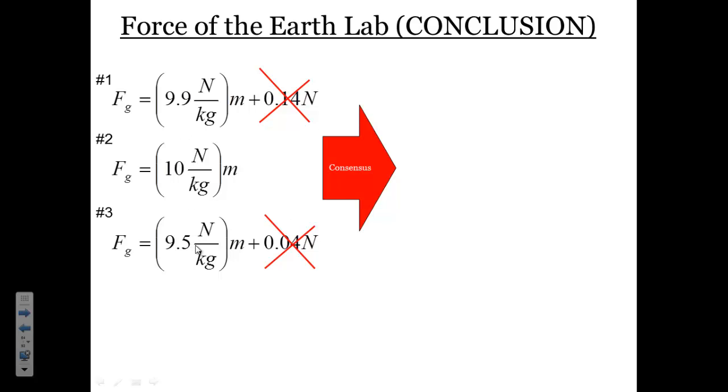When we look at the equations, we see that the slopes are all around in the higher 9s or 10. We decided that the slopes are all about 10 newtons per kilogram. Yesterday, we talked about the fact that this tells us that for every 1 kilogram of mass, the object will feel an additional 10 newtons of force.